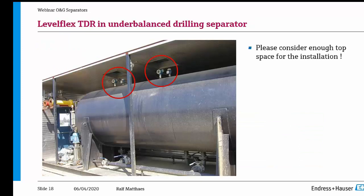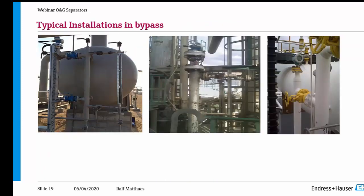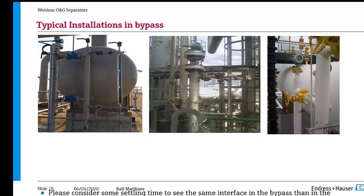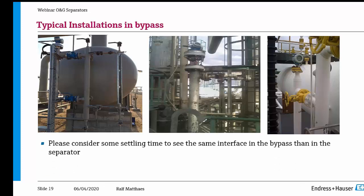Sometimes please consider that you have enough top space; without top space it's hard to install these kinds of devices. Also very common are installations in bypass, but I am personally not a big fan of using bypass installation in separation processes, because you have to ensure settling times to get the same interface in the bypass as in the separator. If your API grade is low, this can become an issue.